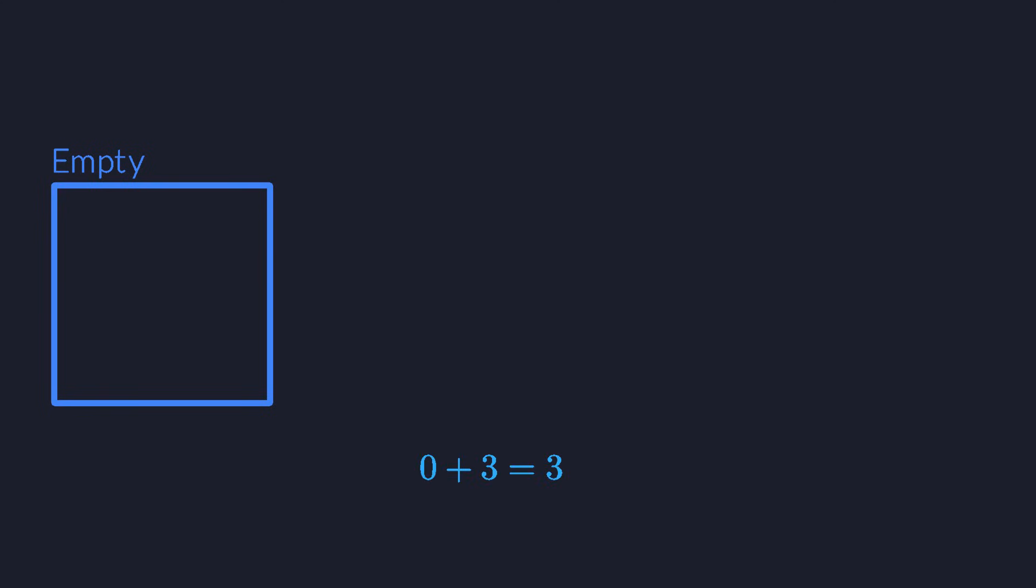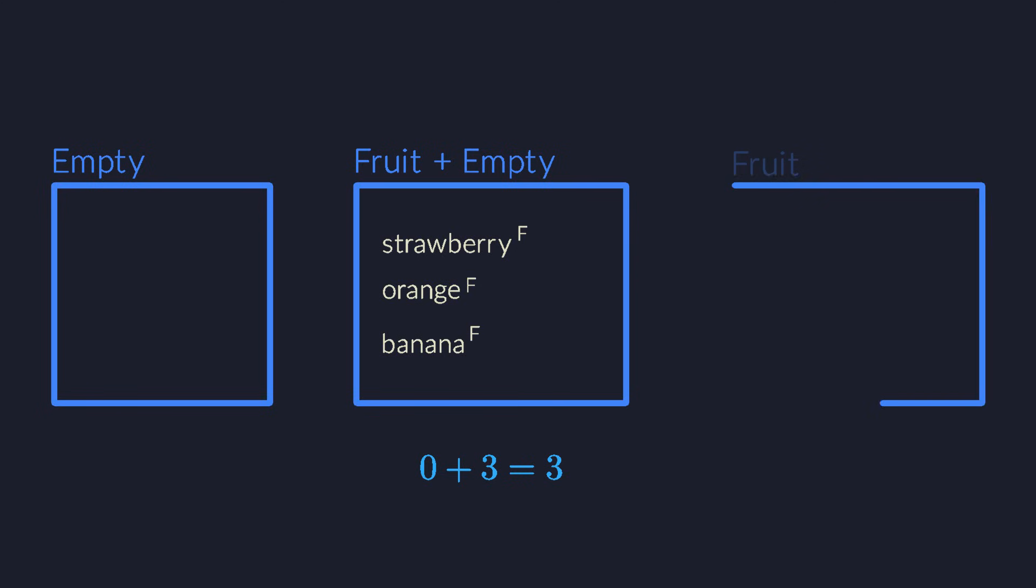Zero plus three equals three, right? Translated into types, this means that the tagged union of the fruit type with the empty type is exactly the same as the fruit type itself. The empty type literally doesn't add anything.